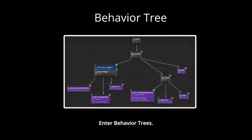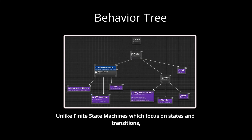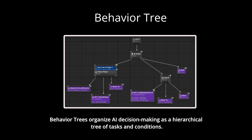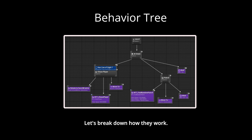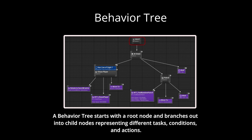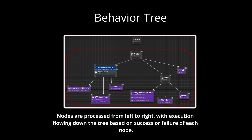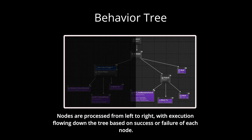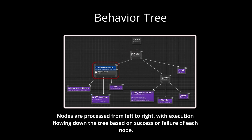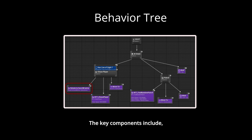Enter behavior trees. Unlike finite state machines, which focus on states and transitions, behavior trees organize AI decision-making as a hierarchical tree of tasks and conditions. A behavior tree starts with a root node and branches out into child nodes representing different tasks, conditions and actions. Nodes are processed from left to right, with execution following down the tree based on success or failure of each node. The key components include selector nodes, sequence nodes, decorator nodes and leaf nodes.